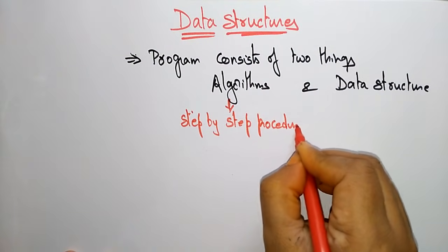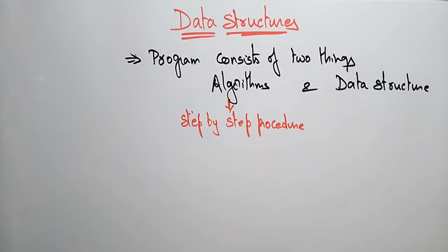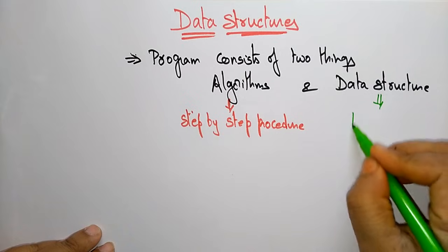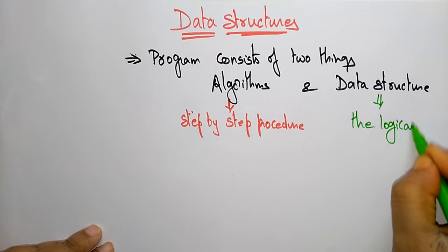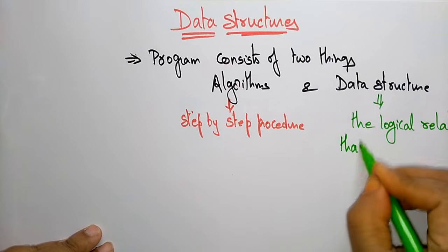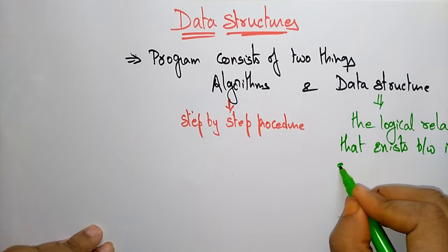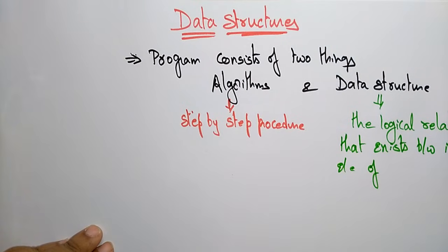An algorithm is nothing but a step-by-step procedure for solving a problem — that is what you call an algorithm. Whereas a data structure represents the logical relationship that exists between individual elements of data.